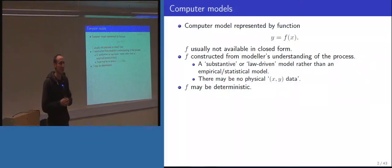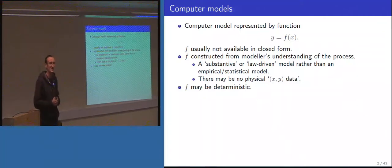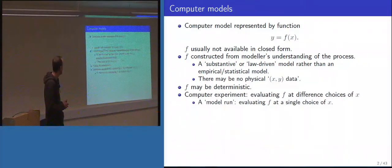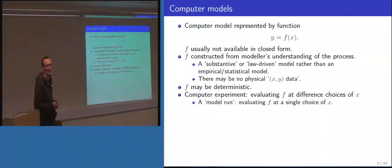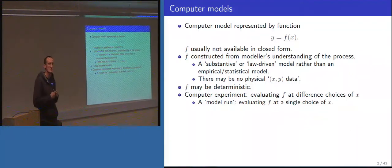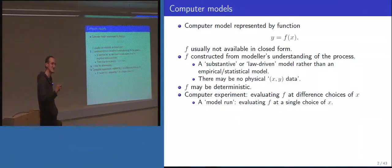F is usually deterministic, though there's growing interest in stochastic models where the model does some internal simulation to get the output, introducing noise. When we talk about a computer experiment, we mean evaluating our function f at different choices of inputs — we try out different input values and see what outputs we get, as opposed to a physical experiment. A model run means choosing a single input, plugging it into the computer code, and getting the output.